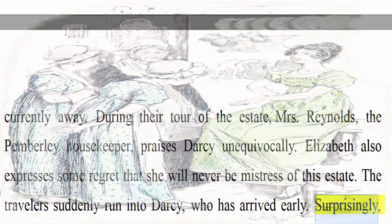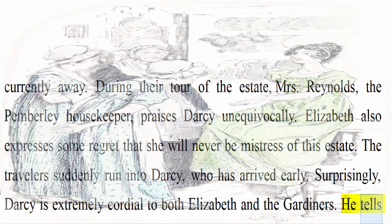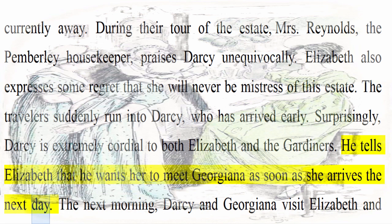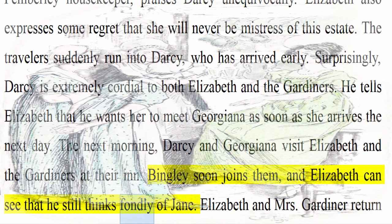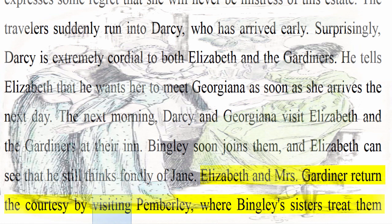He tells Elizabeth that he wants her to meet Georgiana as soon as she arrives the next day. The next morning, Darcy and Georgiana visit Elizabeth and the Gardiners at their inn. Bingley soon joins them, and Elizabeth can see that he still thinks fondly of Jane. Elizabeth and Mrs. Gardiner return the courtesy by visiting Pemberley, where Bingley's sisters treat them quite rudely.